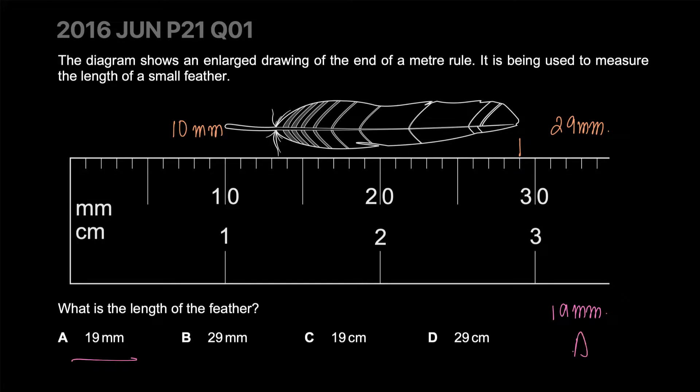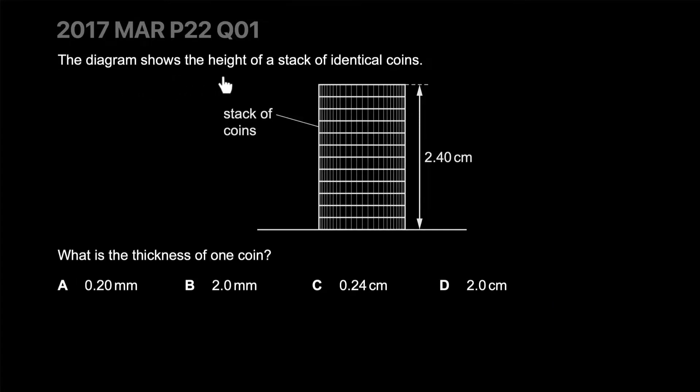The diagram shows the height of a stack of identical coins. If you count them, there are 12 coins. Each has a width of w, so 12w equals 2.4 centimeters. Therefore, the width of one coin should be 2.4 divided by 12, which comes out to be 0.2 centimeters.